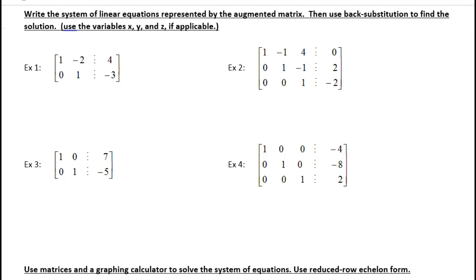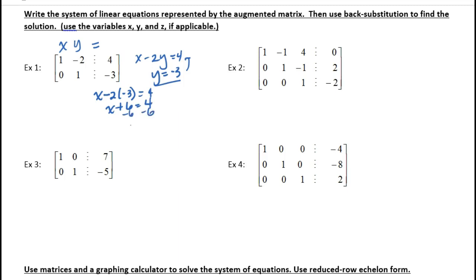Now we're going to look at augmented matrices that are already in reduced echelon form and practice back substitution. Using variables x and y: rewrite as x minus 2y equals 4 and y equals negative 3. So y is already solved. Plugging back in: x minus 2 times negative 3 equals 4, so x plus 6 equals 4, so x equals negative 2. The solution is (negative 2, negative 3).